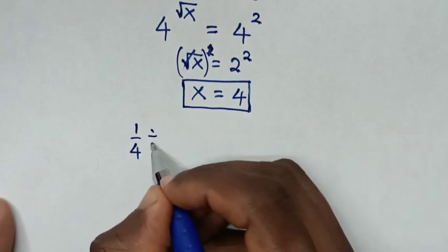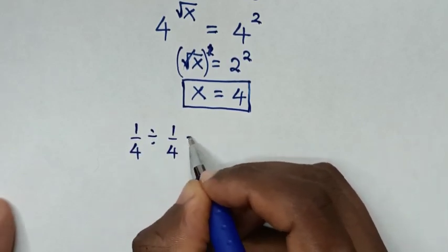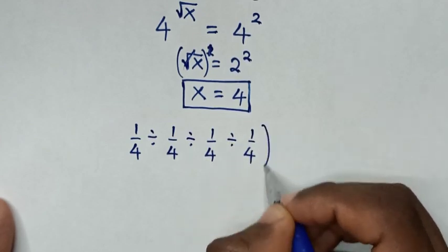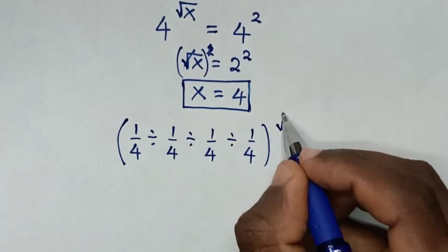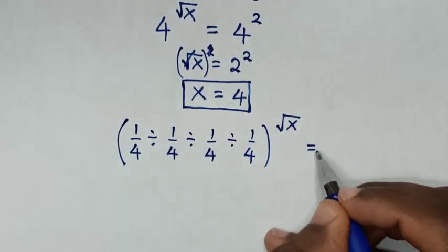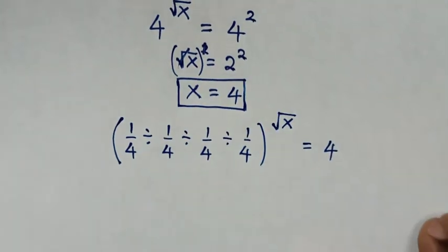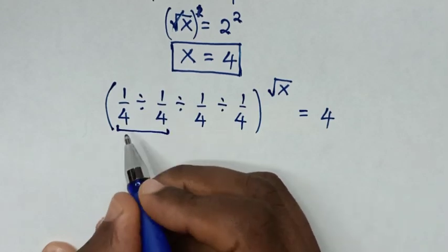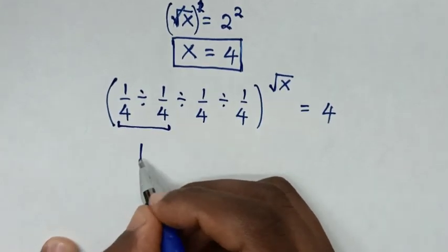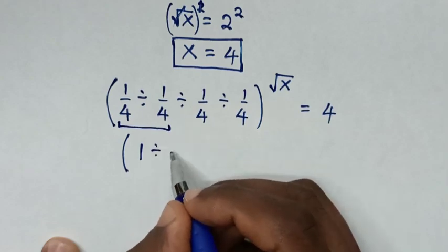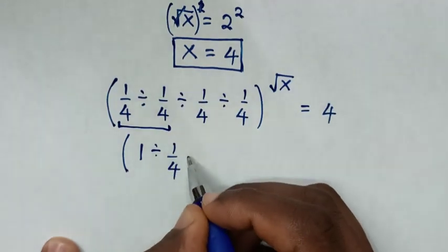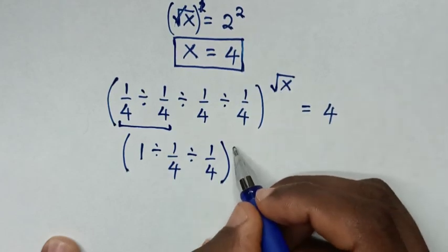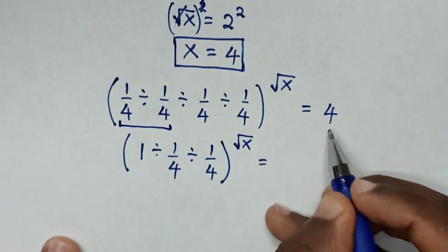Now let's try another problem: 1 over 4 divided by 1 over 4 divided by 1 over 4 divided by 1 over 4, in brackets, to the power of square root of x, is equal to 4. Find the value of x from this problem. We start by dealing with the first operation inside the bracket: this divided by this is 1, then divided by 1 over 4, then divided by 1 over 4, bracket. So the power of square root of x equals 4.